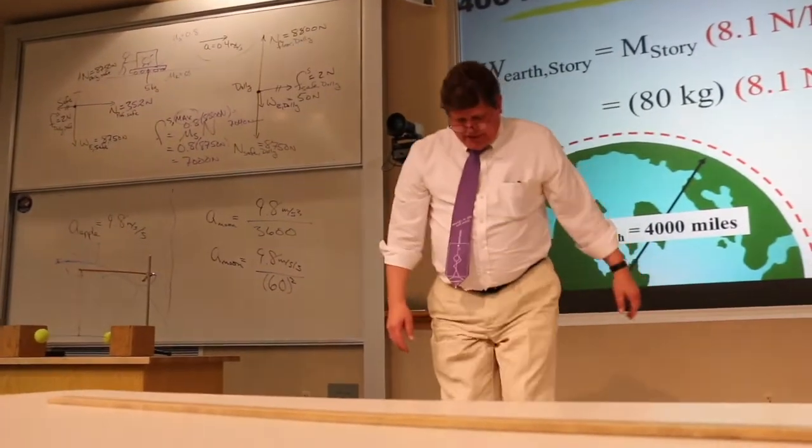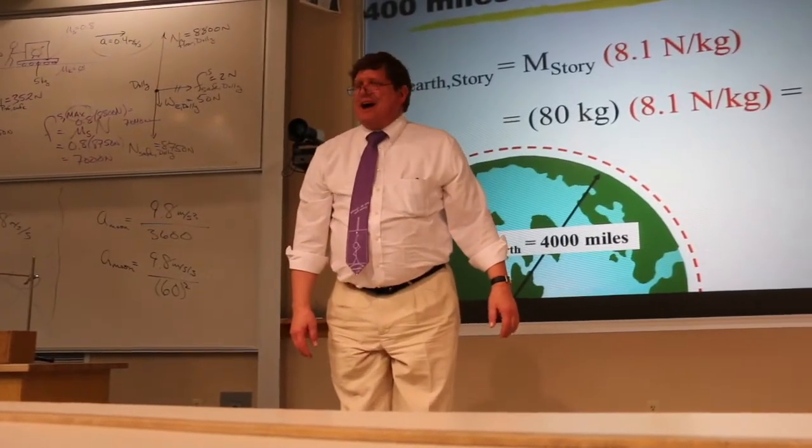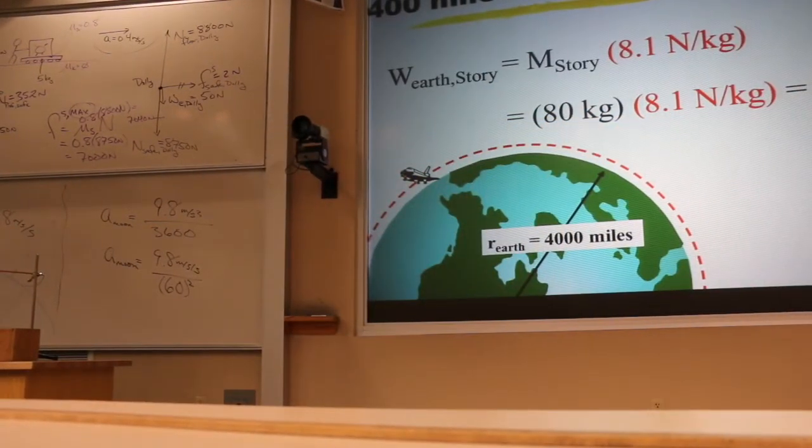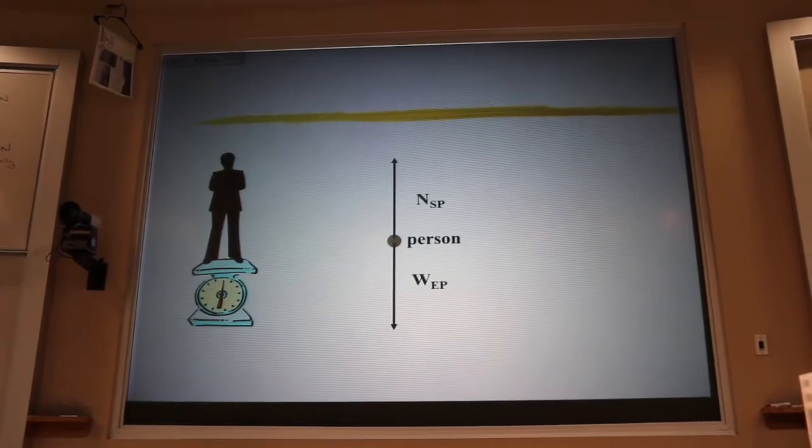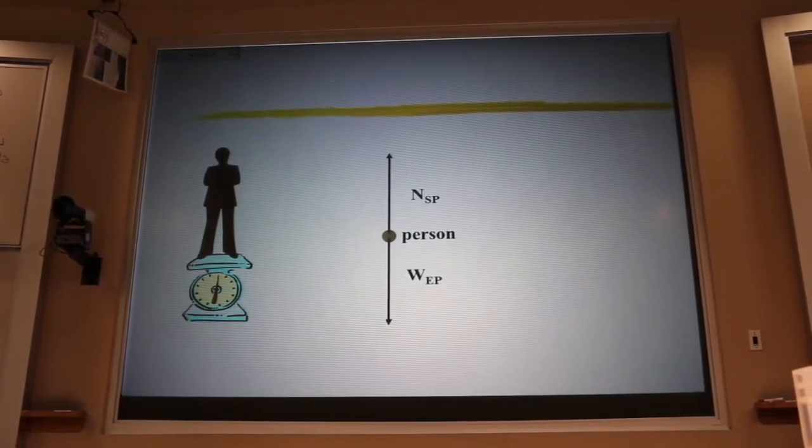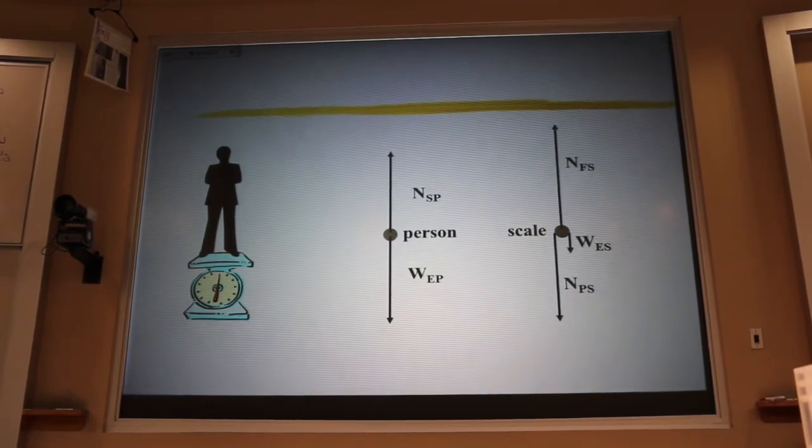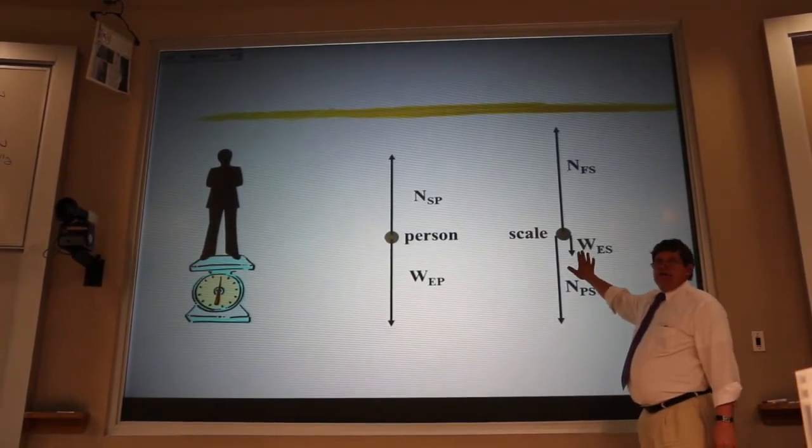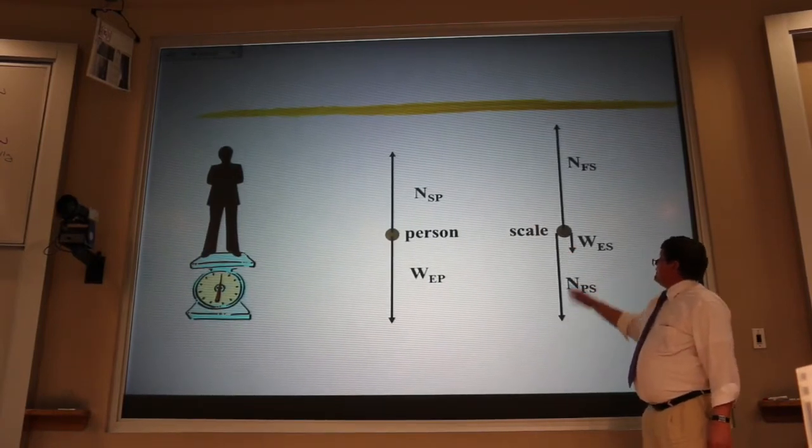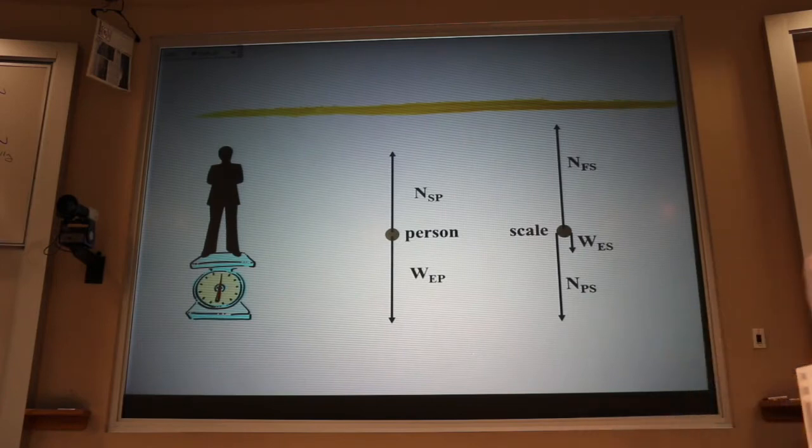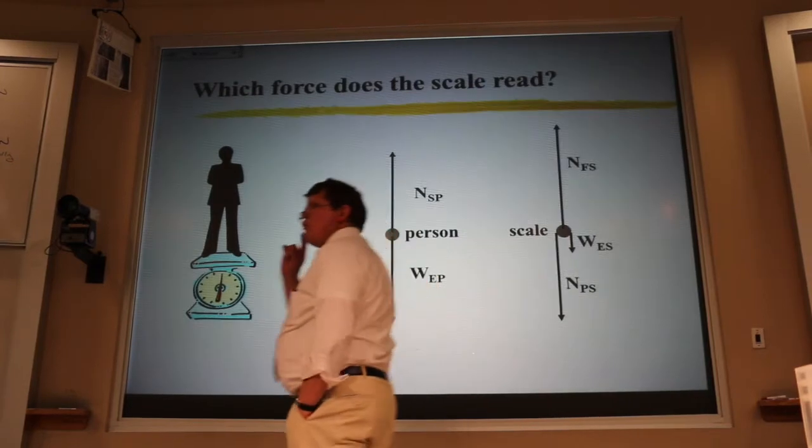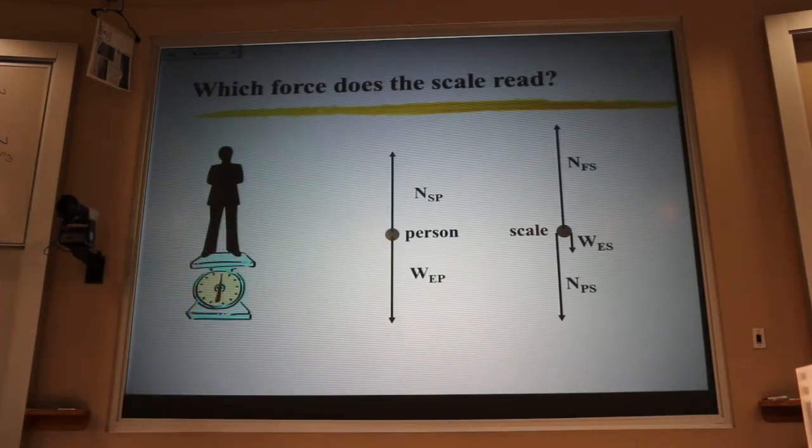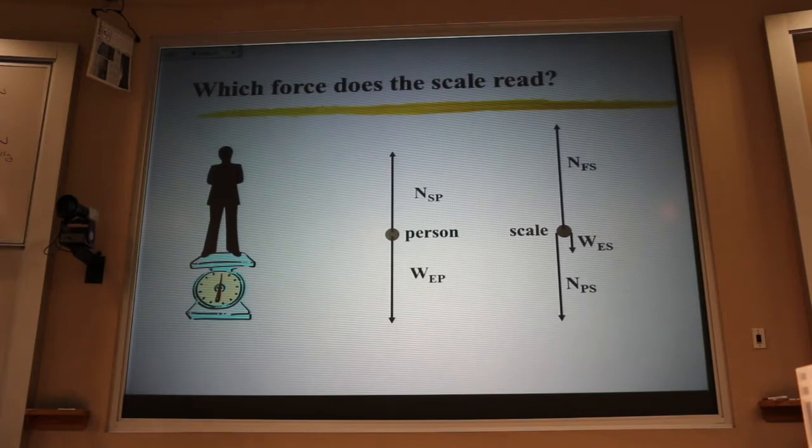If I stand on this scale, I can draw a free body diagram for me. There's the Earth pulling down on me. There's the scale pushing up on me. I can also draw a free body diagram for the scale. There's the Earth pulling down on the scale, not much because it's got a small mass. I'm pushing down on the scale, and the floor is pushing up on the scale. Now, folks, there are five forces up there. But the scale is actually only reading one of those five forces. Tell your neighbor which one it is.